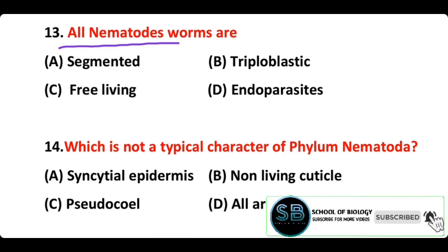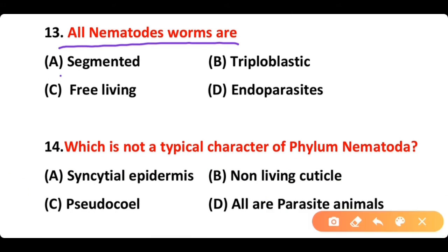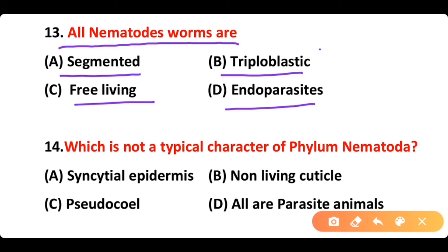Question 13: All nematode worms are: A) segmented, B) triploblastic, C) free-living, D) endoparasites. The correct answer is option B. All nematode worms are triploblastic pseudocoelomates.